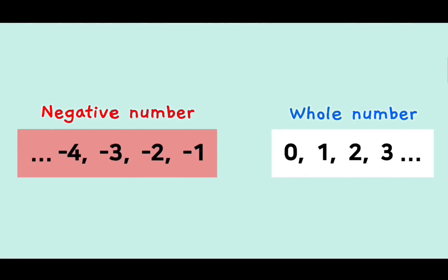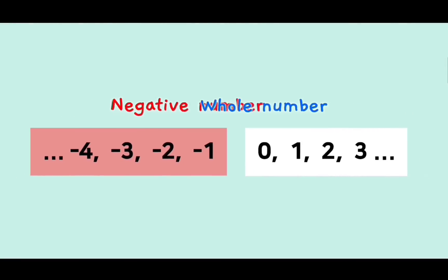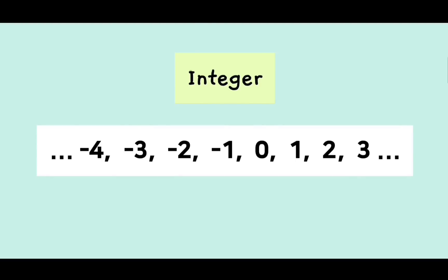Ok, if we join the negative numbers with the whole number, we call it as integers, and it is denoted by Z. Z? Yes, it is because the German word for numbers is Zahlen. The integers form a pretty comprehensive set of numbers, right?